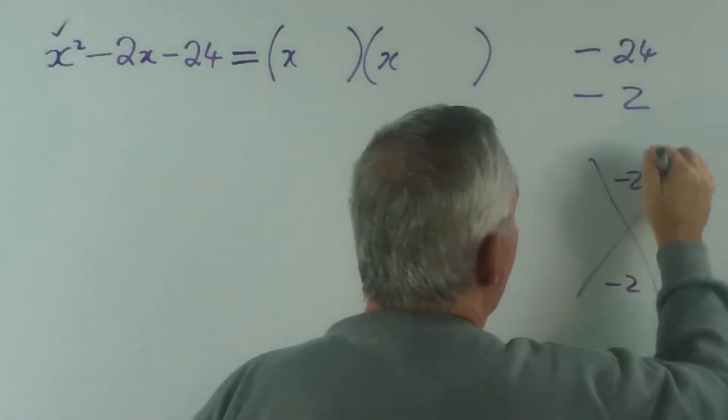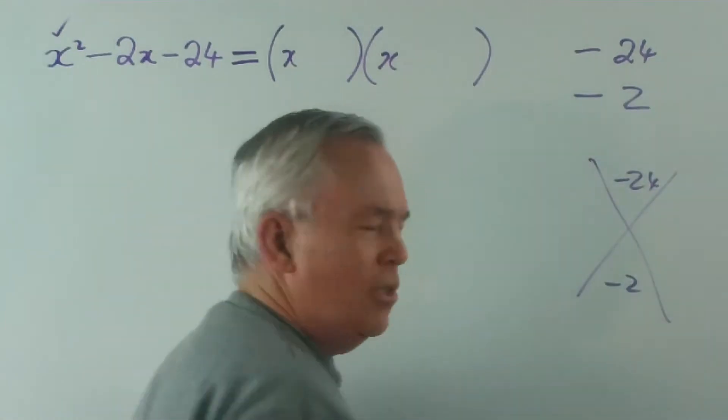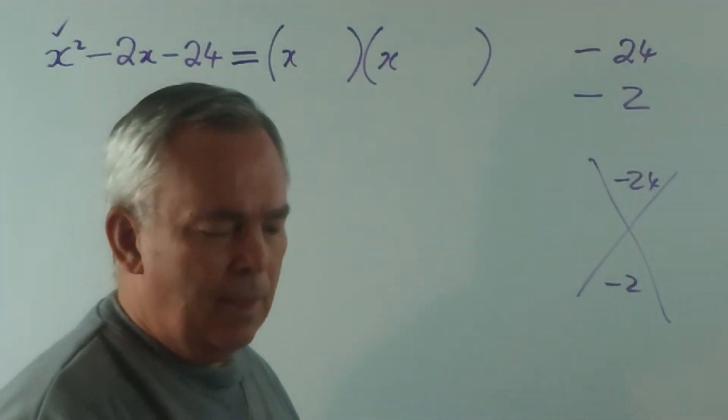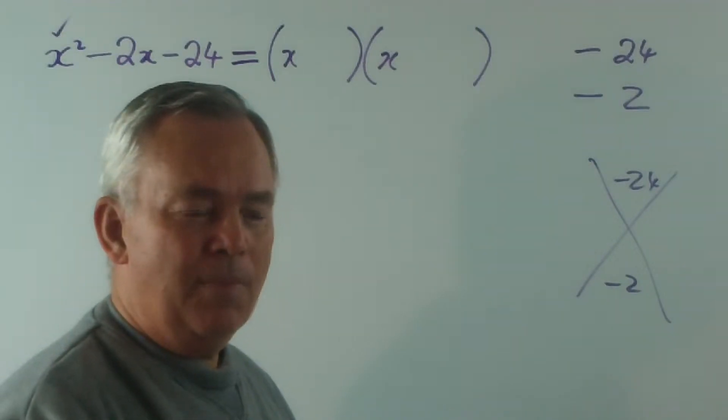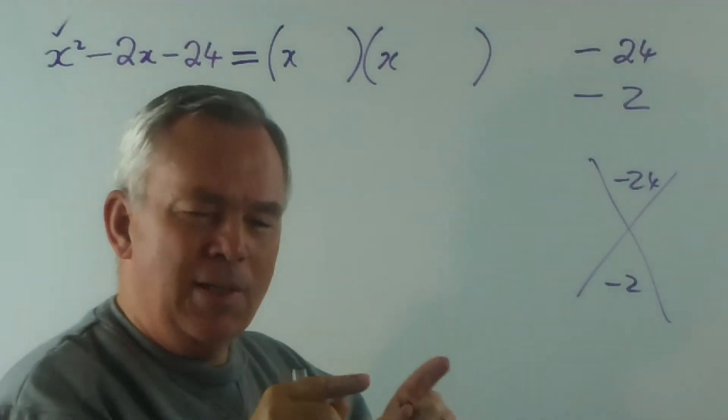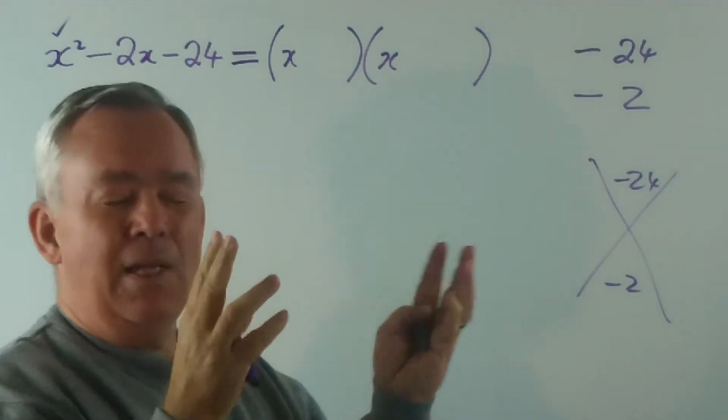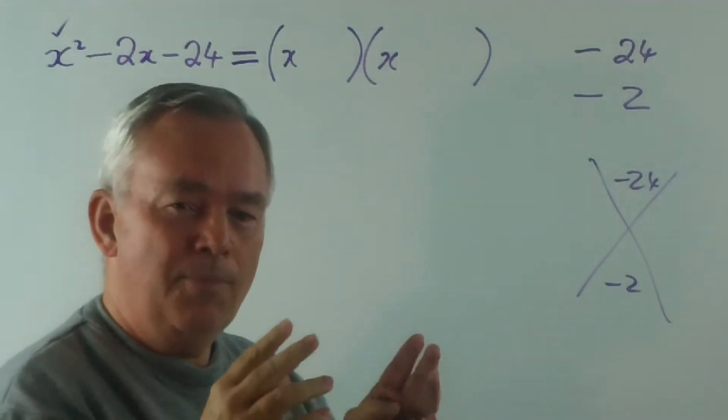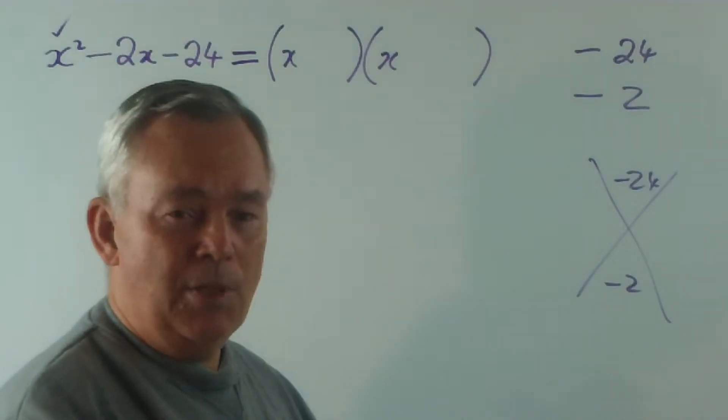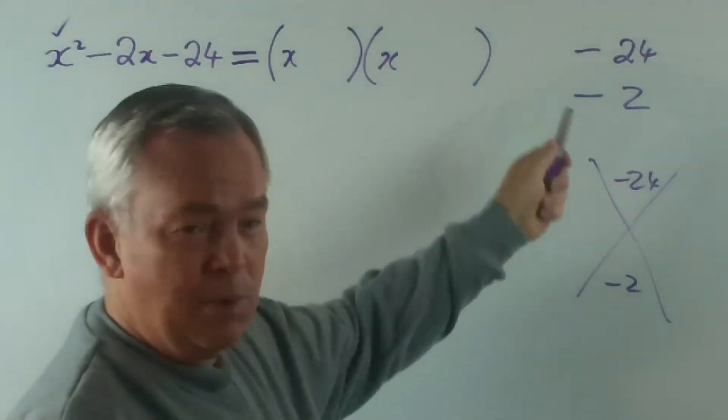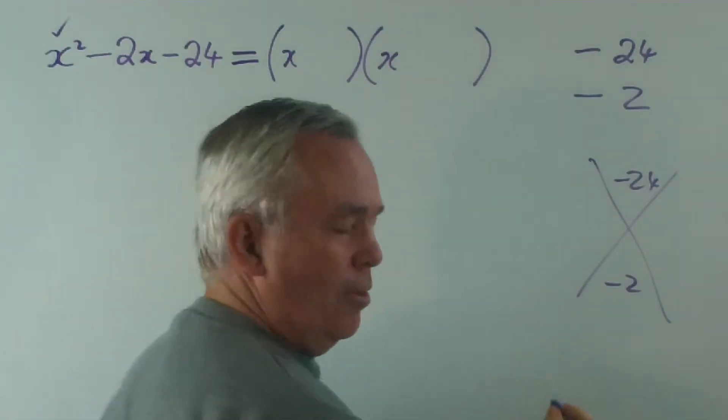And what we ask is what numbers multiply to make minus 24 and add up to give minus 2. Now it's at this point that lots of students struggle because having a product to give a negative number and a sum giving a negative number and trying to think of all the positive and negative combinations at work frustrate students immensely. And I encounter many students in my tutoring that have trouble with this precise thing.